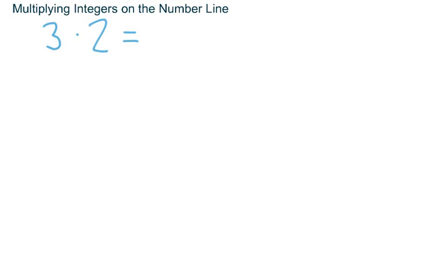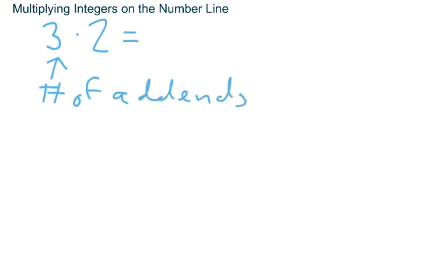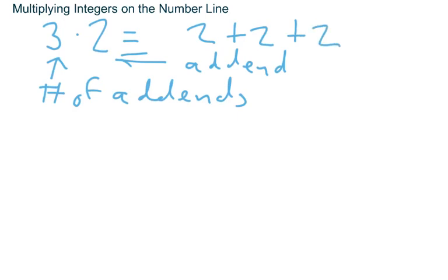Multiplication can be thought of as repeated addition. The first number always tells you the number of items you're going to add — generally called the add-ins, the number of add-ins — and the second number tells you what it is you're going to add, what the add-ins are. So three times two means take three twos and add them together, the sum of three twos.